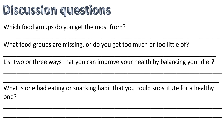What food groups do you get the most from? I'd probably say protein — I probably eat more meat than any other group. What food groups are missing, or do you get too much or too little of? I think I probably need to add some more fruit and better dairy — I need to switch what kind of dairy I have. List two or three ways that you can improve your health by balancing your diet: lose weight, be in better shape, breathe better. What is one bad eating or snacking habit that you could substitute for a healthy one?